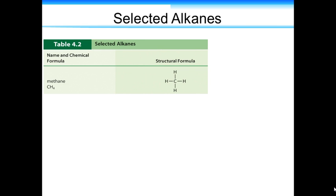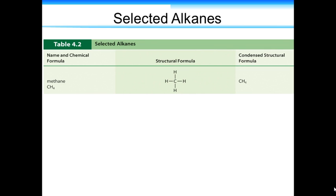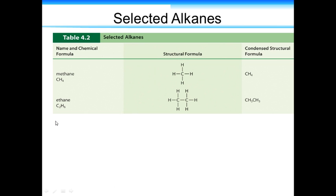It is assumed that you are so familiar with Lewis structures that you would know to add them if need be. This is the condensed structural formula, which often gives information about how the atoms are attached versus just the molecular formula. We'll see that in ethane: the molecular formula is C2H6, but that doesn't give as much information as the condensed formula, which clearly shows that there is one CH3 group and another CH3 group side by side.